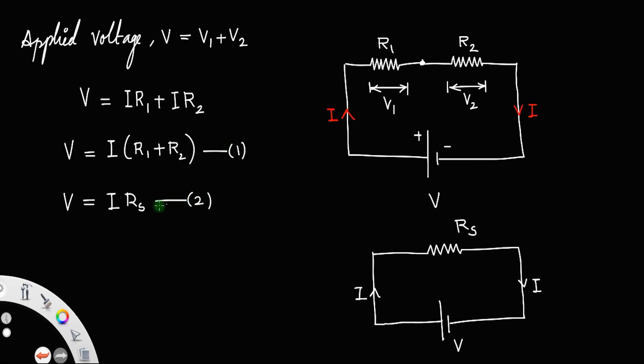If you compare 1 and 2, the voltage remains the same because we took the same cell, that is 1 equal to 2 implies, we have I Rs is equal to I into R1 plus R2. Clearly, you can cancel this I, so that the effective resistance in series will be sum of the individual resistances, Rs equals R1 plus R2.